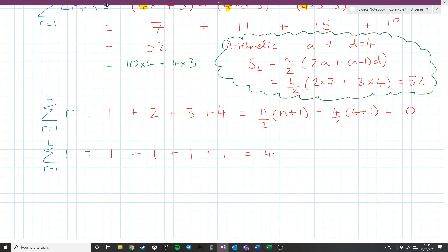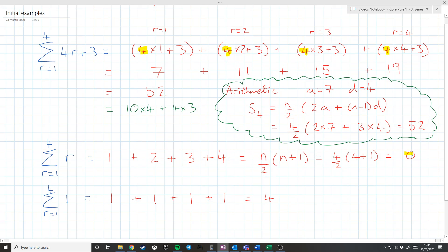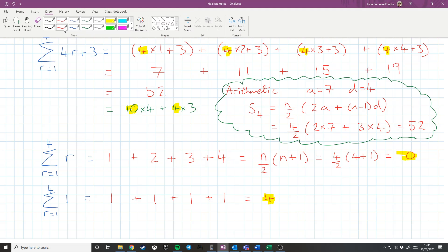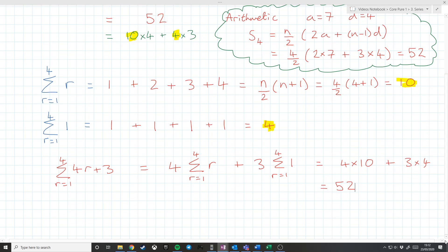So more generally, well actually, before we go on, you might notice that what we've got here is we've got 10 here and we've got 4 here, which corresponds to this 10 and this 4. And hopefully, with a bit of thought, you can see that instead, we could have done this, that the sum from r equals 1 to 4 of 4r plus 3 is equal to 4 times the sum from r equals 1 to 4 of r plus 3 times the sum from r equals 1 to 4 of 1, which is going to be 4 times 10 plus 3 times 4, which is 52. And indeed, this is true.